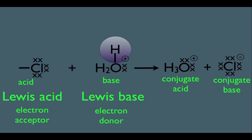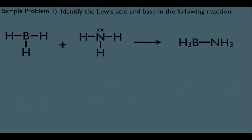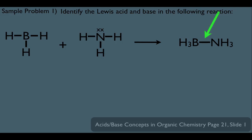So, let's look at a sample problem to make sure you got this. Sample problem one, identify the Lewis acid and base in the following reaction. First, let's make an important observation. Let's look at our product. Notice this is the new bond that's being formed, the bond between the nitrogen of the ammonia and the boron of BH3.